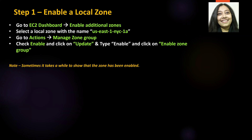Step one is to enable a local zone. We will go to our EC2 dashboard, then click on 'Enable additional zones.' I've mentioned NYC here, but you can use any local zone you like. Select that local zone — in this case US East 1 NYC 1A — go to Actions, then Manage Zone Group, check Enable, click Update, type 'enable', and finally click on Enable Zone Group. After completing all these steps, it takes a while to show the zone as enabled, but you'll get a success message at the top.